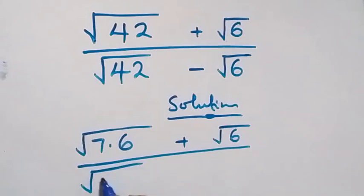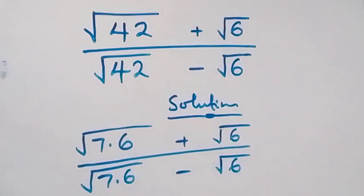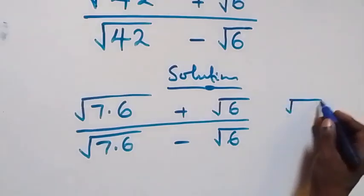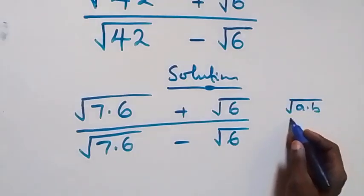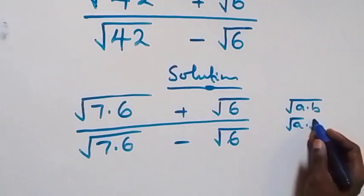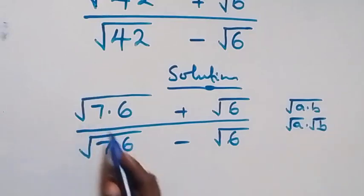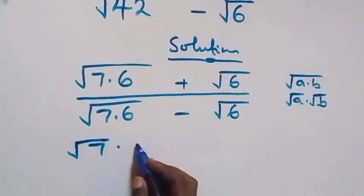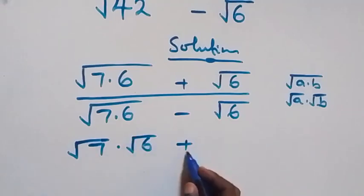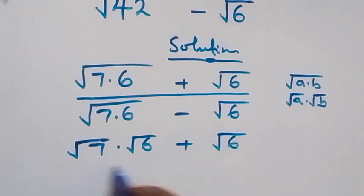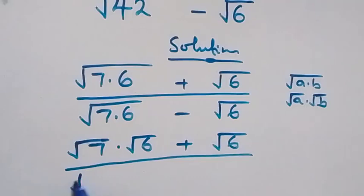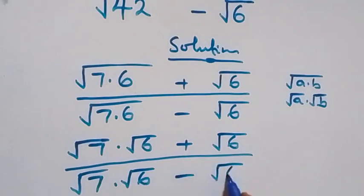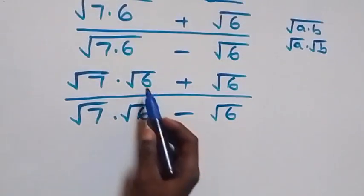From here we have root(a × b) which can be written as root(a) times root(b). We can separate this, and it becomes root 7 times root 6 plus root 6, divided by root 7 times root 6 minus root 6.